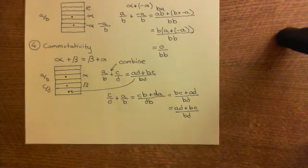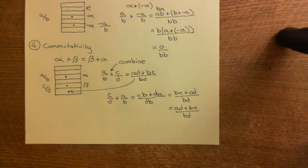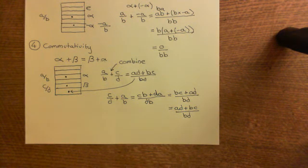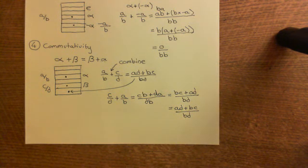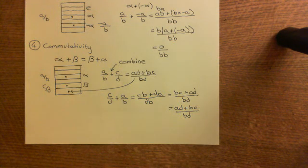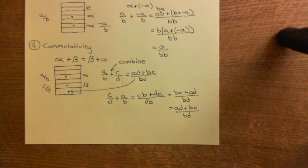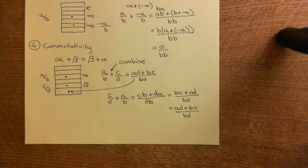This proves that addition of these two equivalence classes obeys commutativity. In the next video, we'll move on to the multiplicative properties: the multiplicative identity, multiplicative associativity, multiplicative inverses and commutativity, and finally distributivity. See you for the next video.